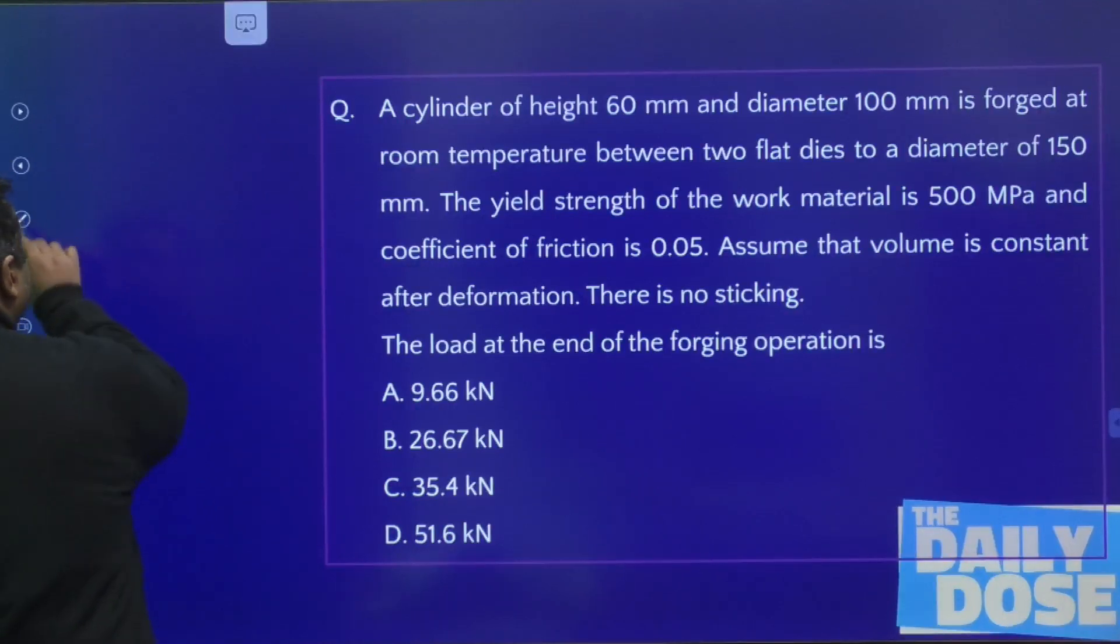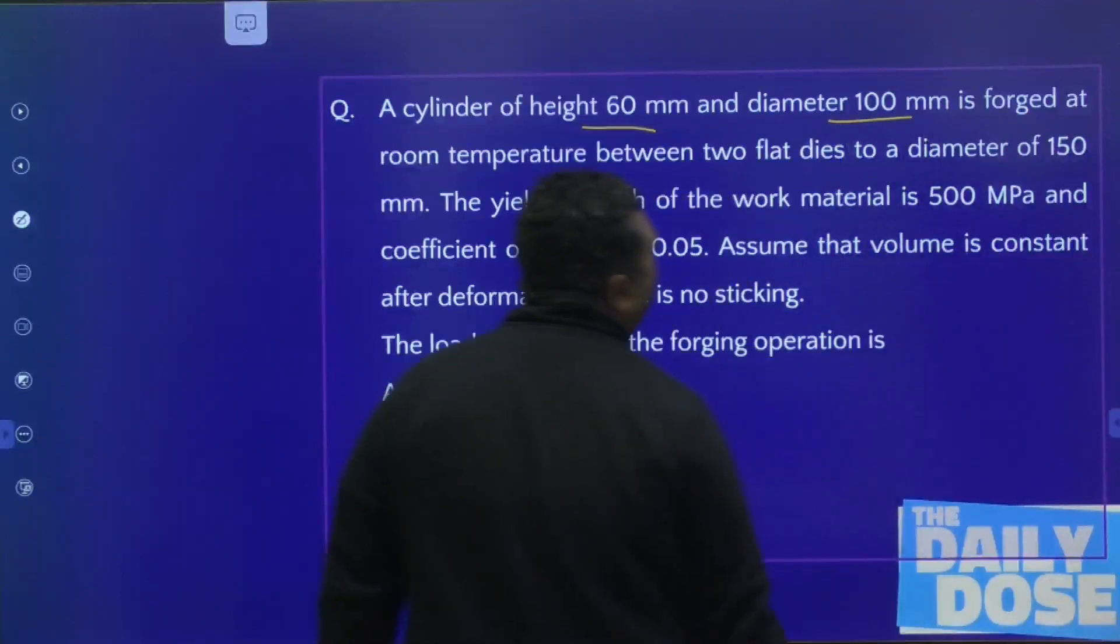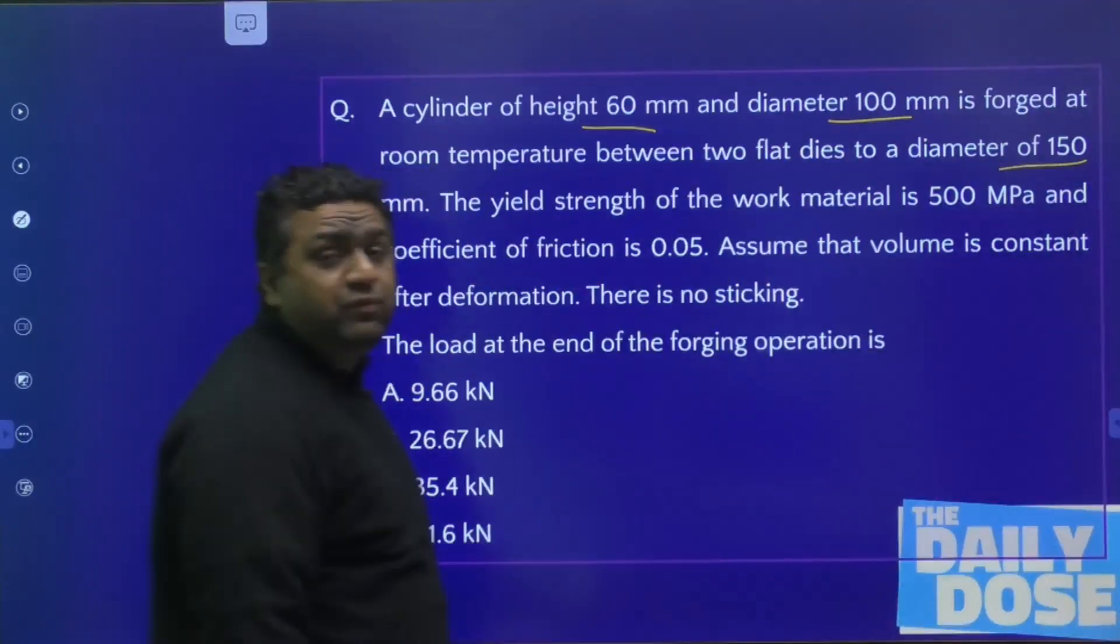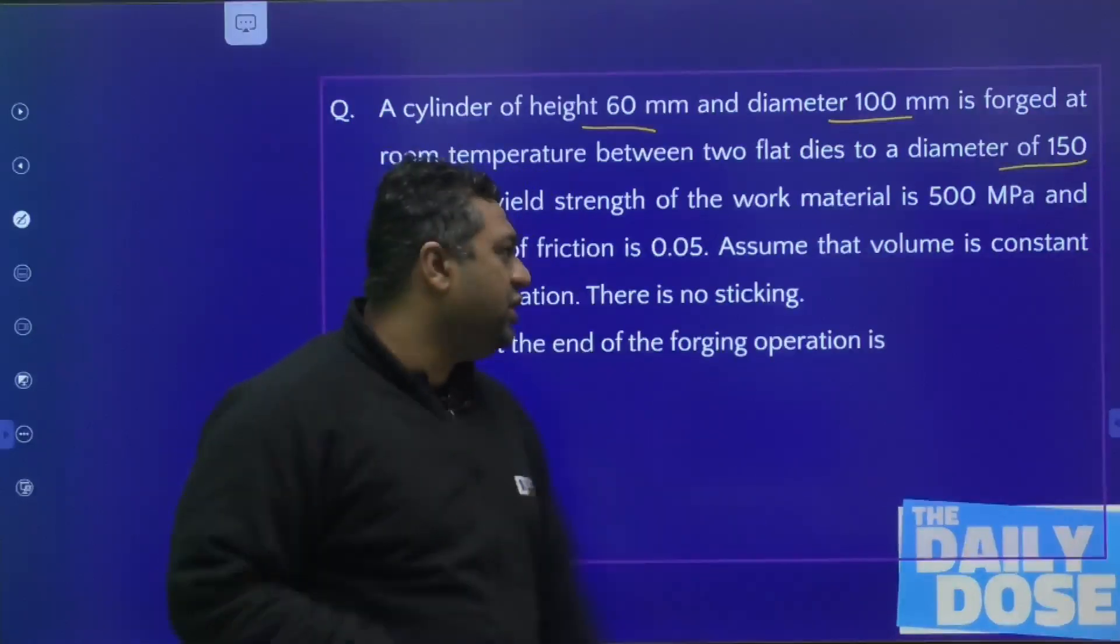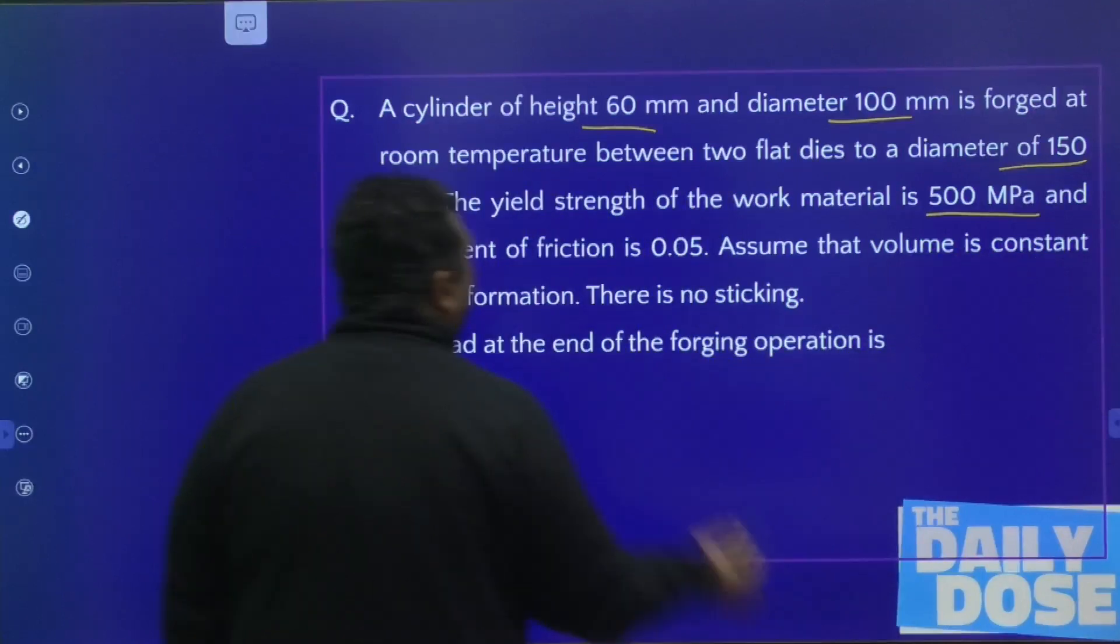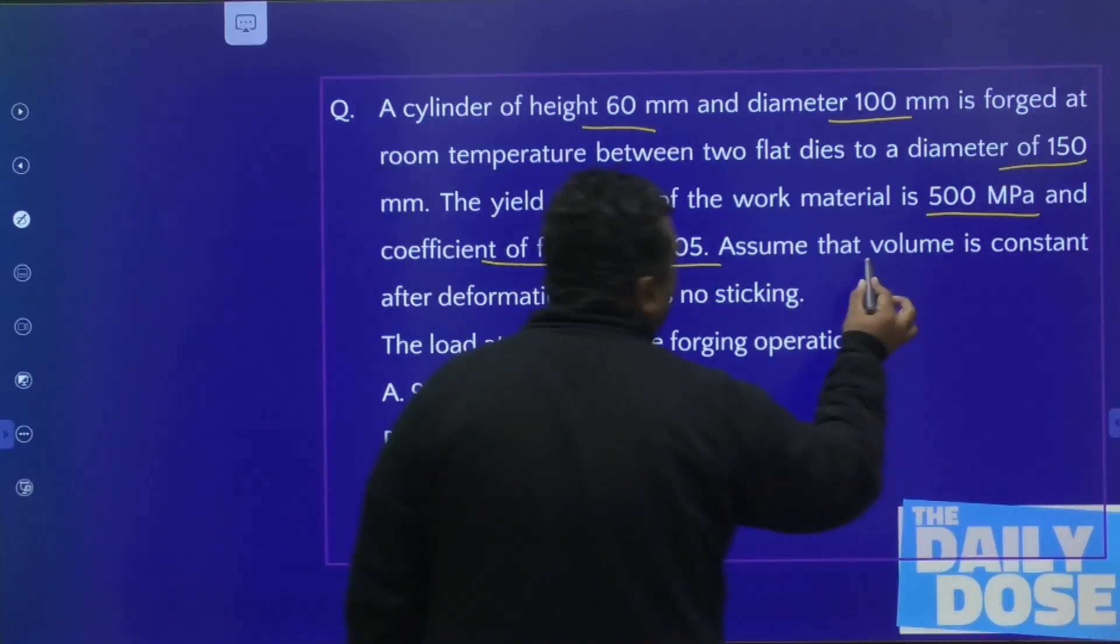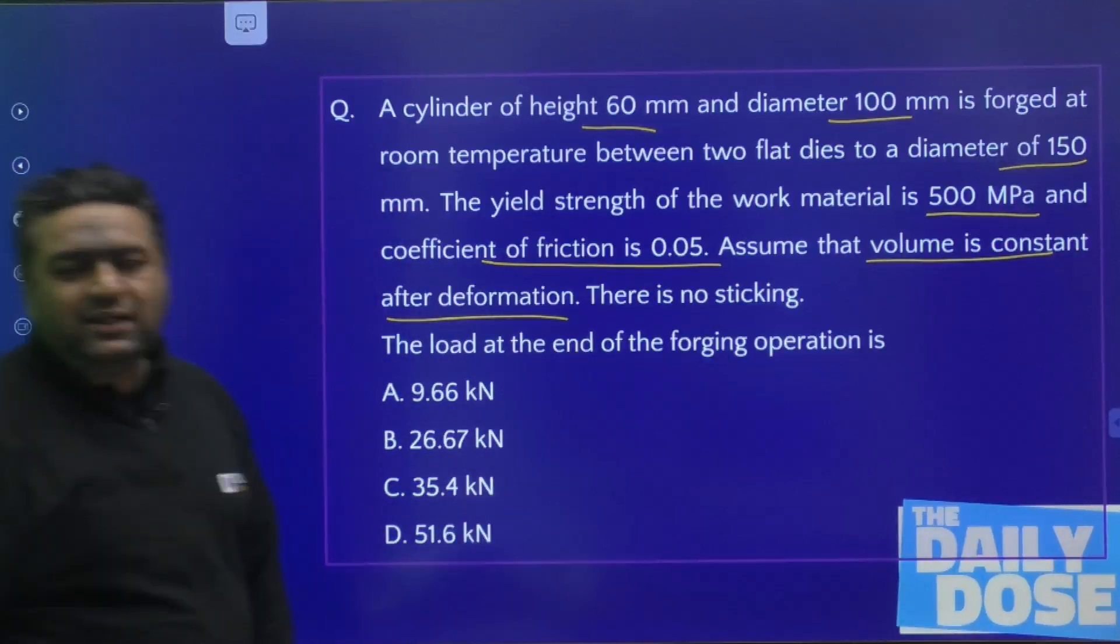They are saying initially we have this height and this diameter, and finally you will have this diameter because dies will convert the component shape. The yield strength is 500 MPa and coefficient of friction is 0.05. Volume is constant after deformation. Why did they say volume is constant?